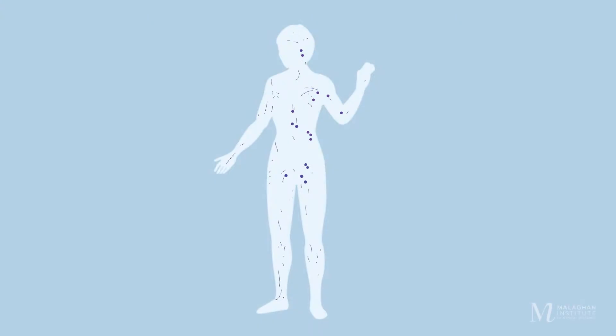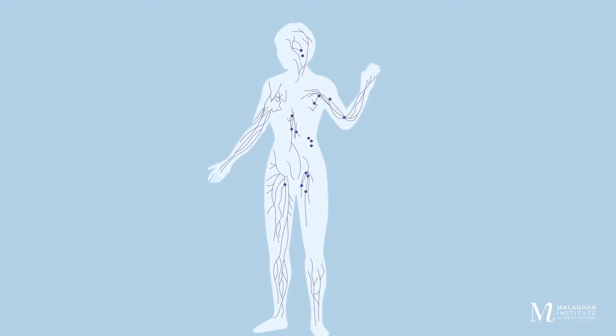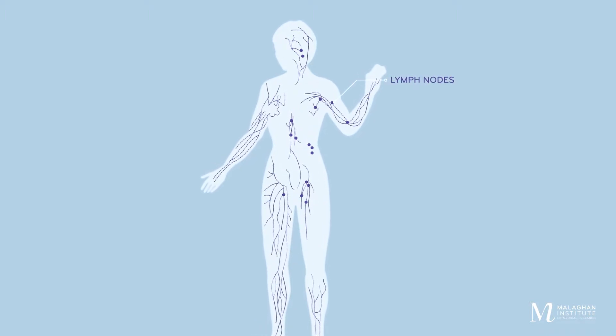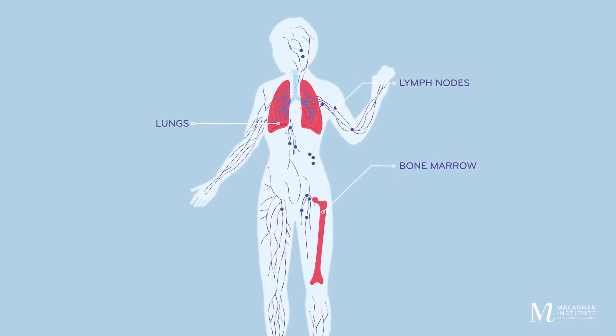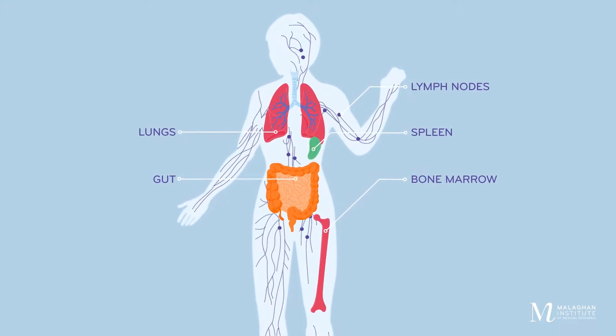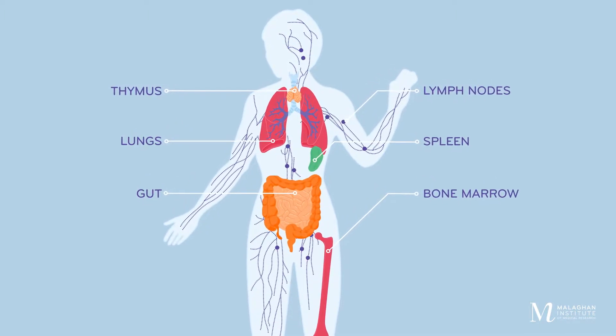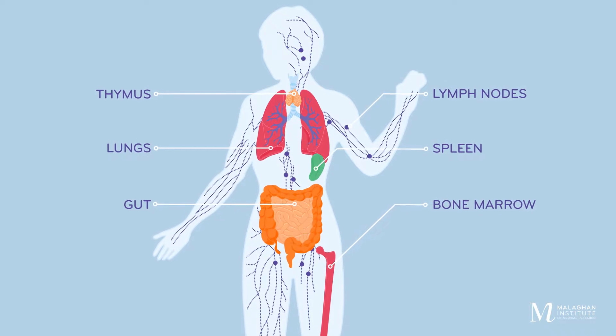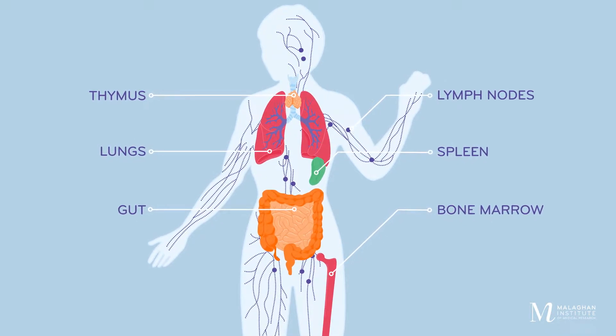Your immune system keeps you safe from infection and disease. It's found throughout the body, in the lymph nodes, bone marrow, lungs, gut, spleen and thymus. It's made of many cells and structures, creating several lines of defence.